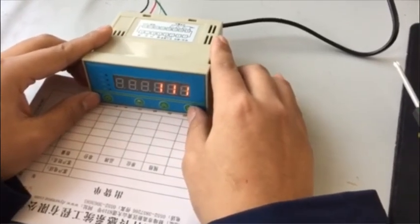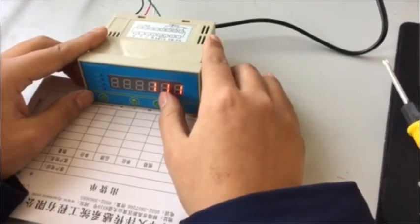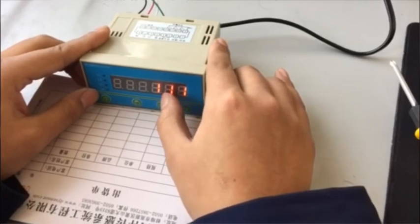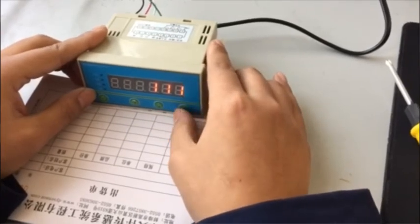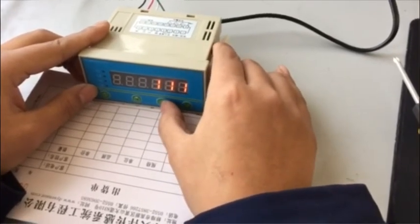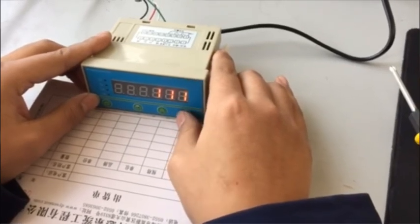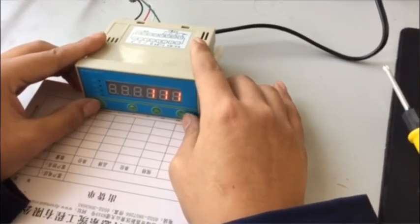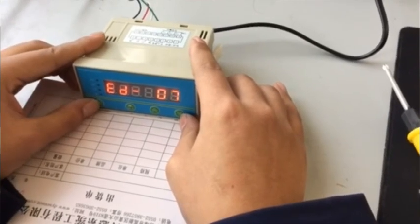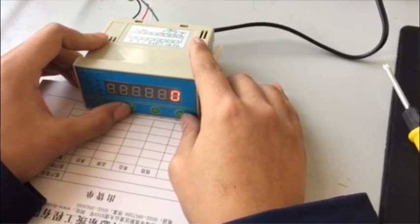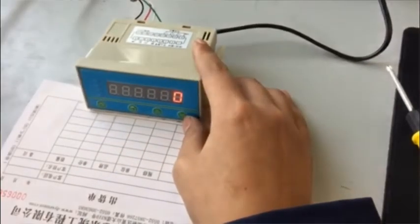ED04 is to modify the upper and lower limits. Press K4 to enter. From left to right, there are a third point alarm value, the second point alarm value, and the first point alarm value. Modify to 0, it means lower limit alarm. Modify to 1, it means the upper limit alarm. Do not modify other parameters.